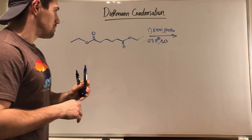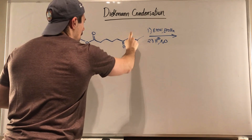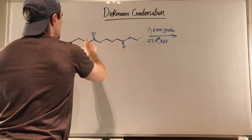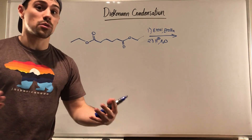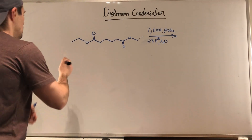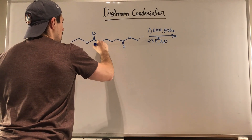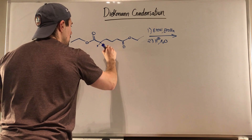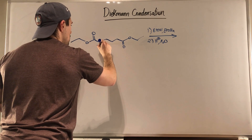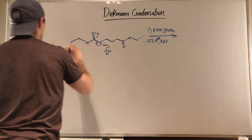In this reaction, luckily we are symmetrical because we can see one-two oxygen, one-two oxygen, and then one-two-three-four on each side — it doesn't matter which side you start to work with. The very first thing we're going to do is form an ester enolate. So I'm just going to show ethoxide coming in and deprotonating, forming the ester enolate.